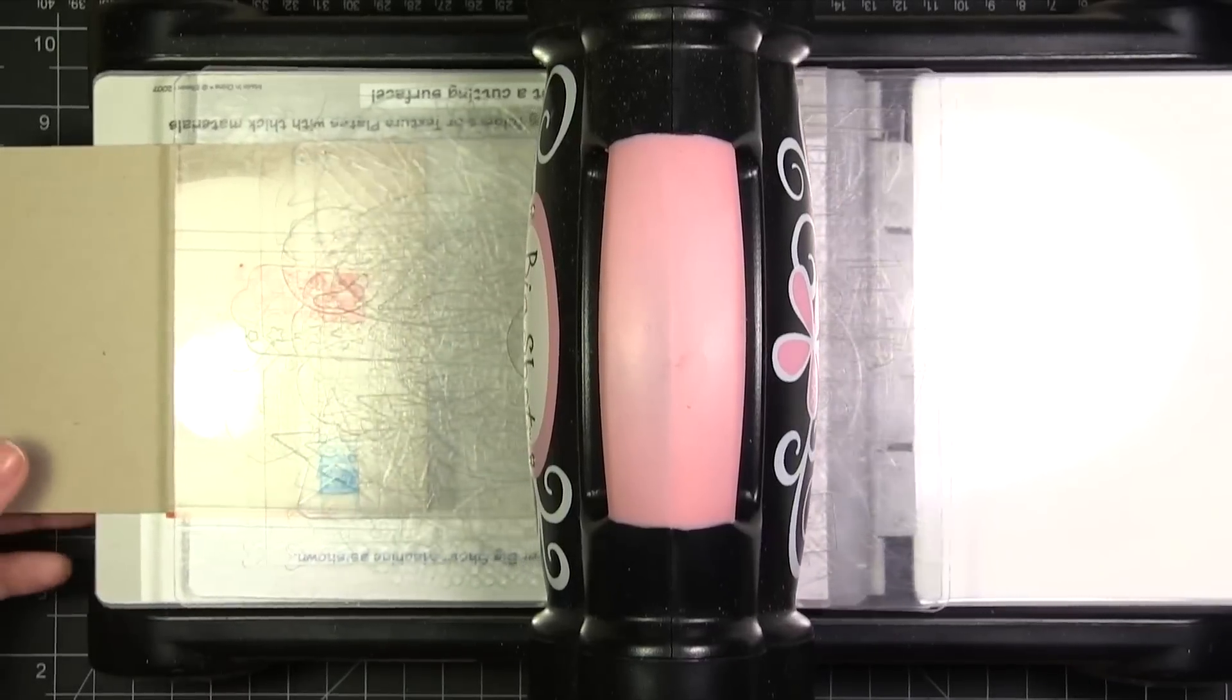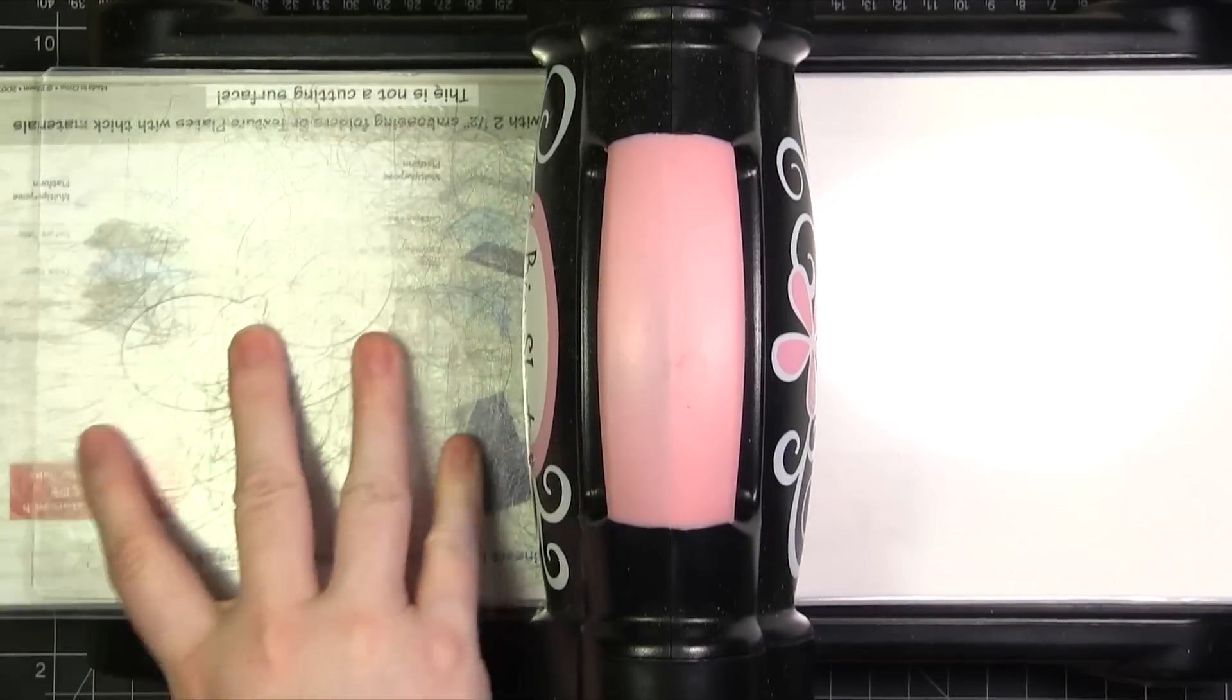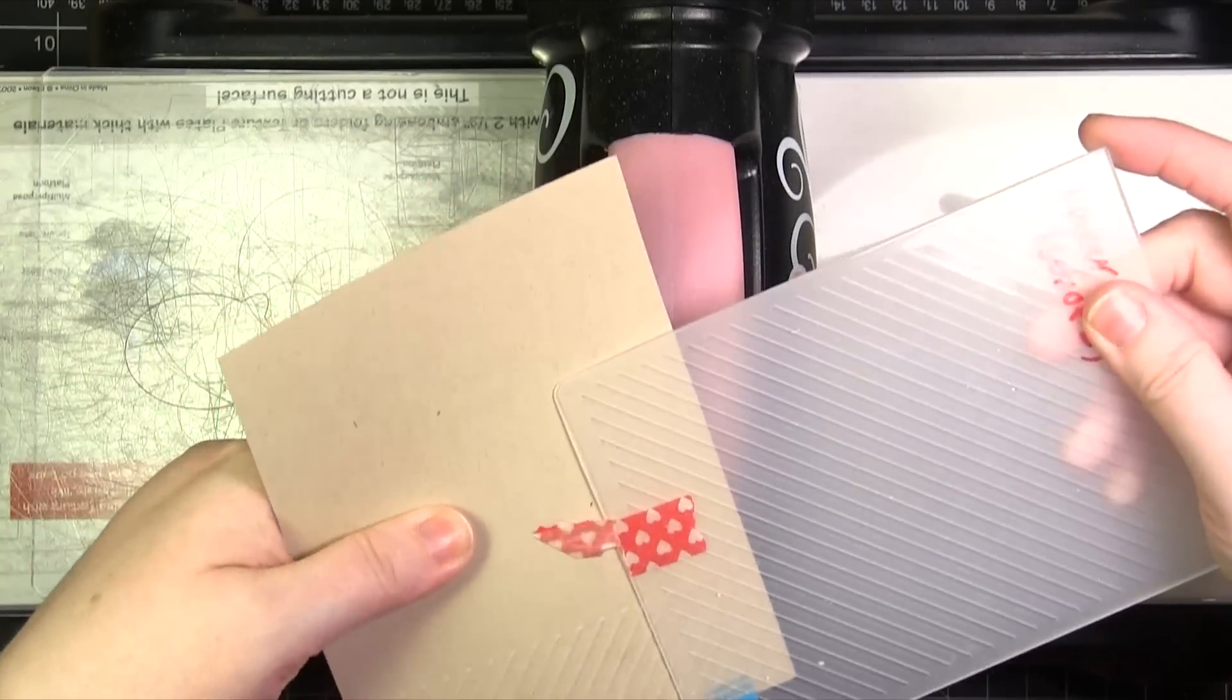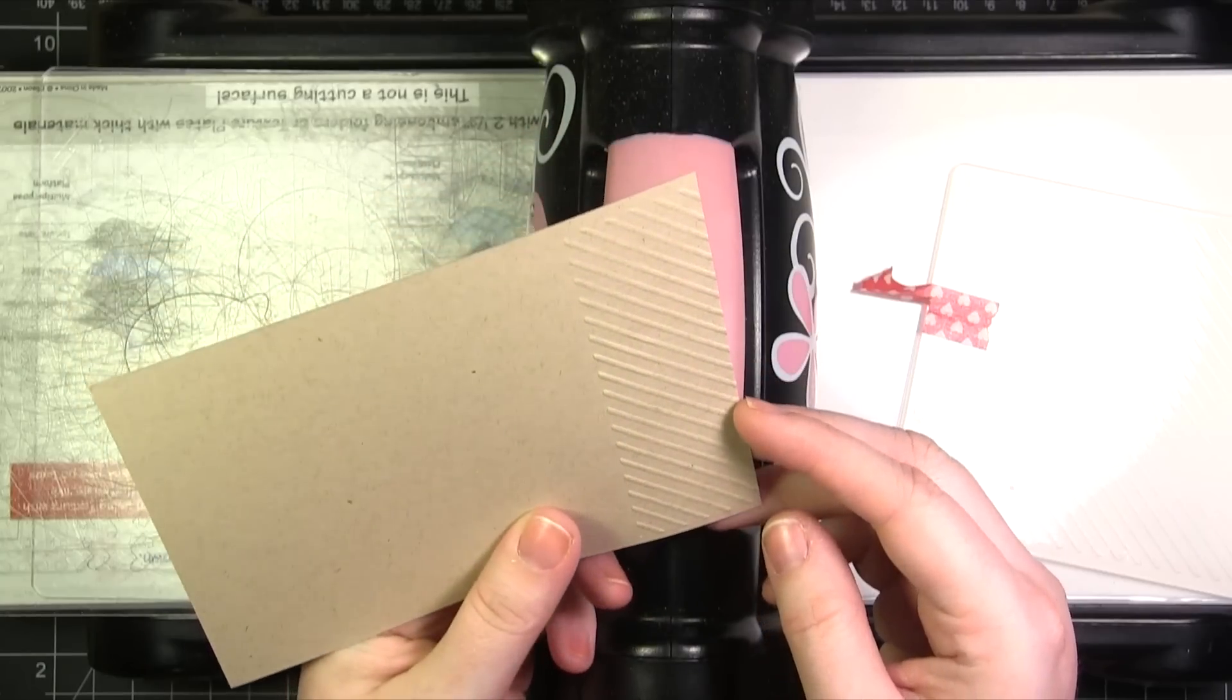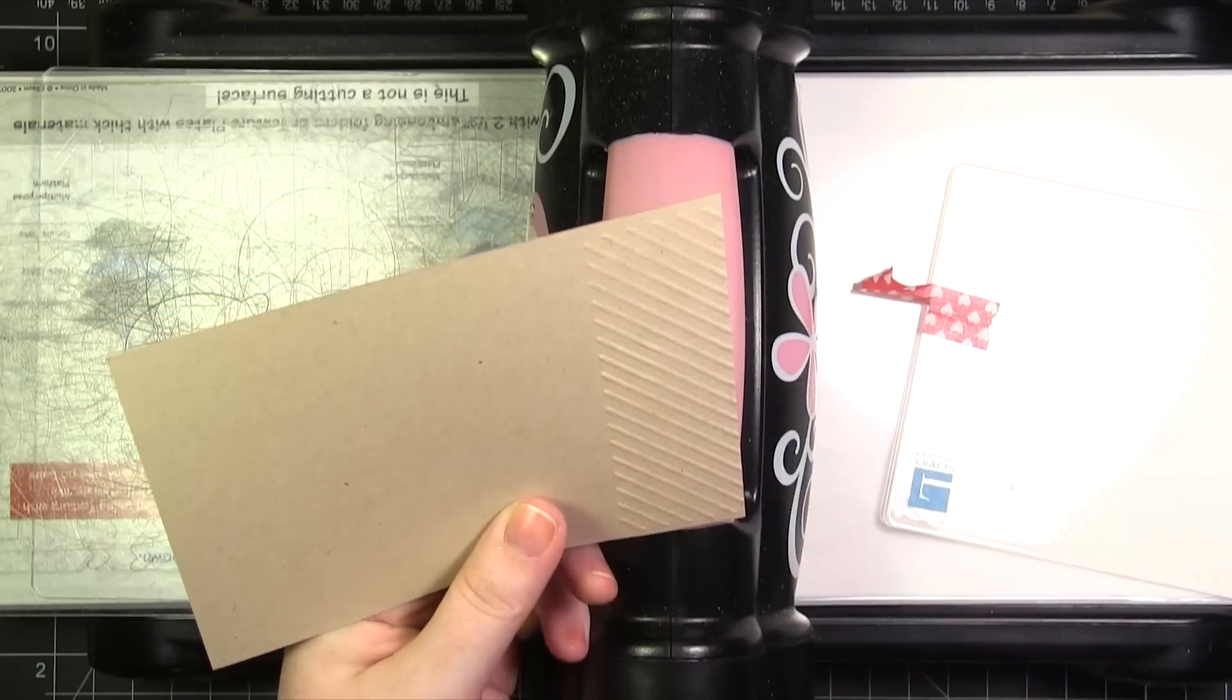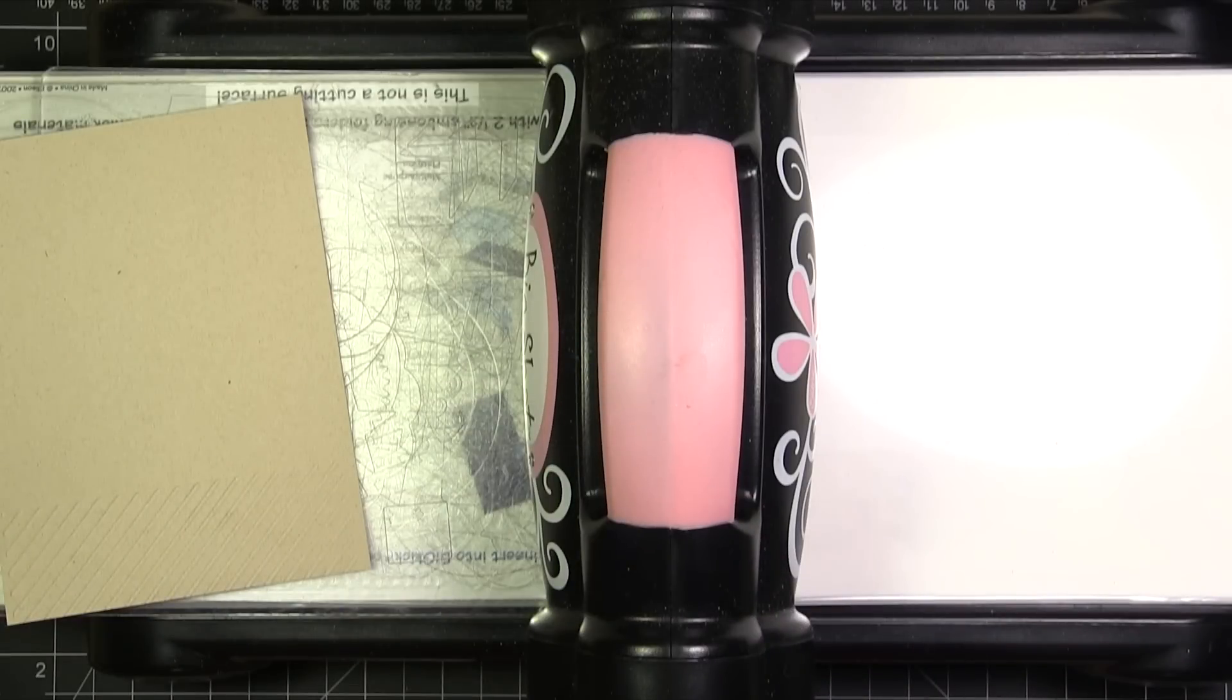Alright. Then I can pull this off. Now I have embossing only on that one side. You can see that has a nice clean edge. That's one way that you can partial emboss.